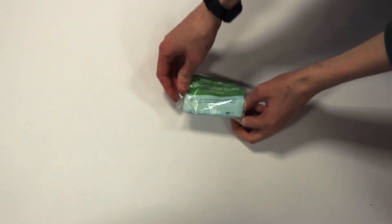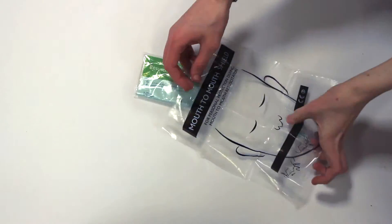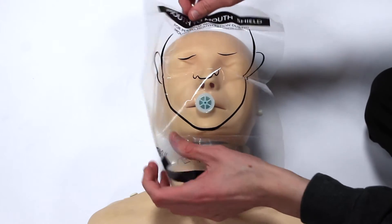Here's how to use one. Take it out of its packaging and unfold it without touching the mouthpieces. Lay the shield with the mouthpiece over the casualty's mouth, then start CPR.